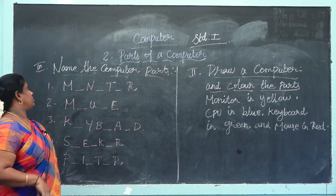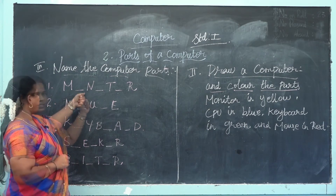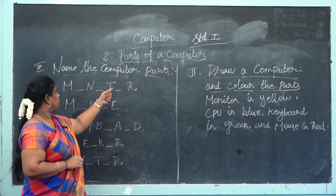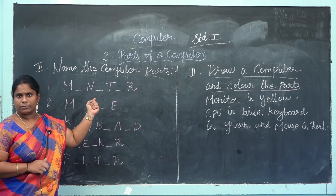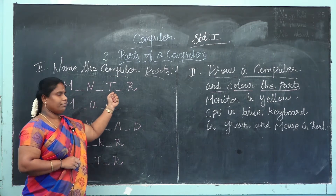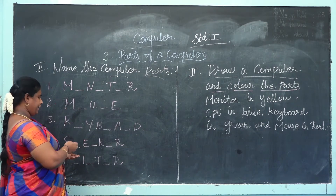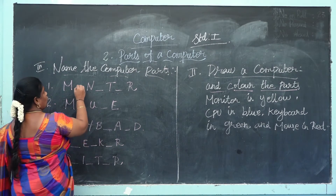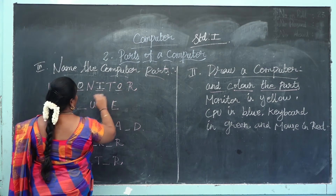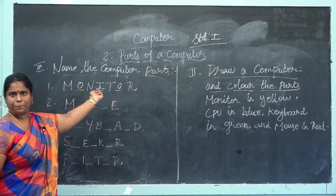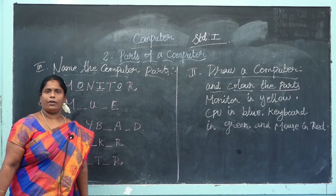Name the computer parts. First one — what is that? N-dash, T-dash, R. Can you all guess that? Yes — monitor. What is the spelling of monitor? M-O-N-I-T-O-R. Is it correct spelling? Yes, monitor spelling is M-O-N-I-T-O-R.